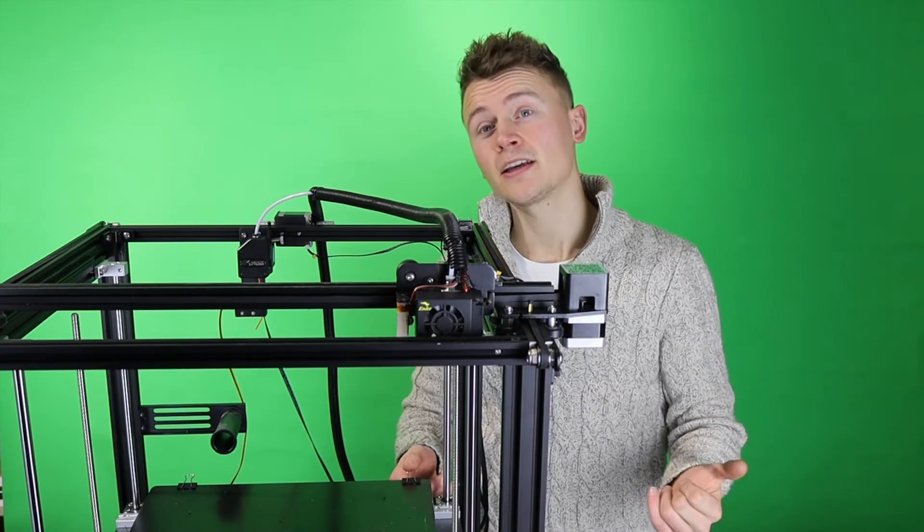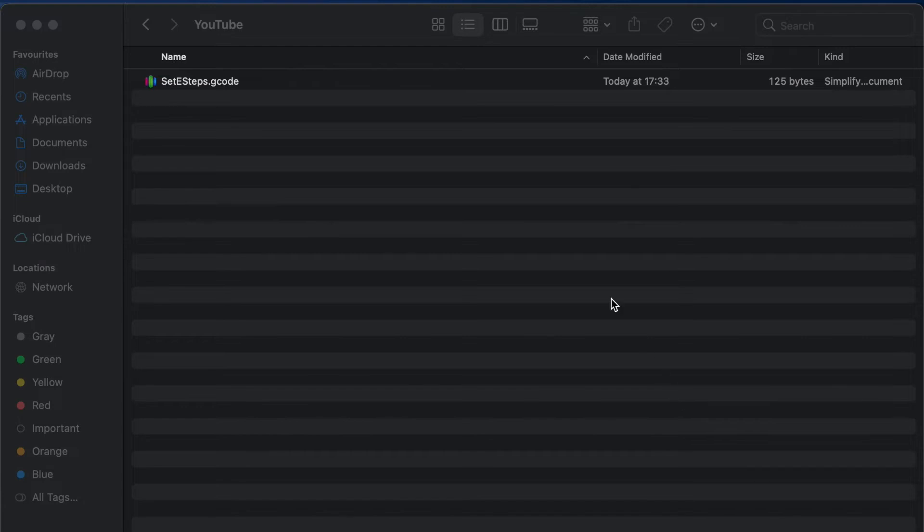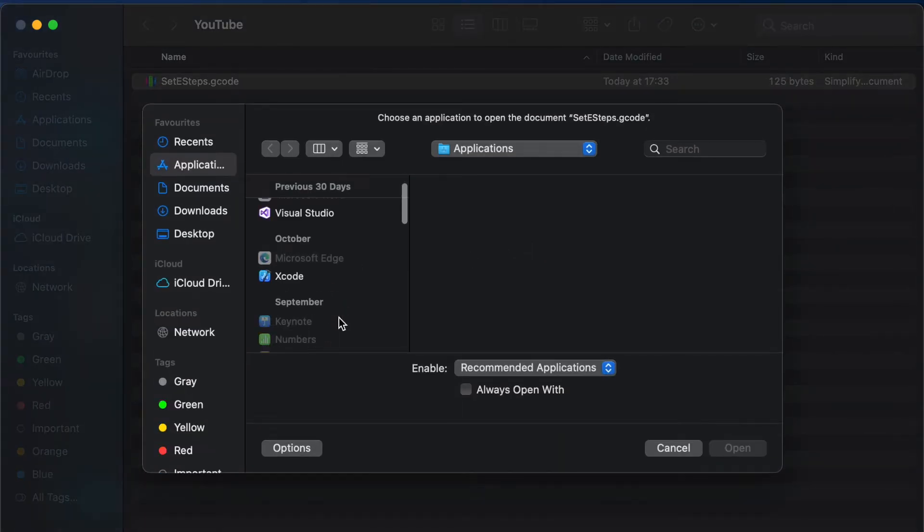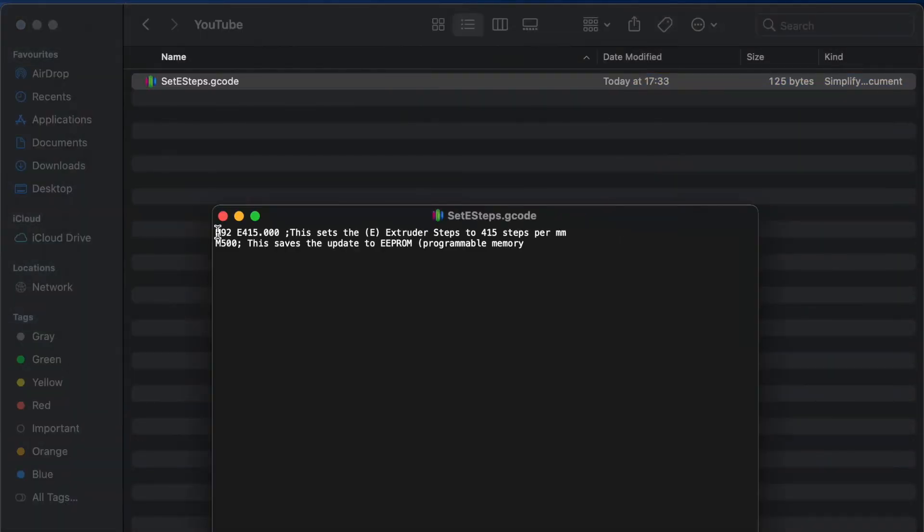Okay, so I'm going to show you now the commands that you need to do. I've just gone ahead and created this file which I'm calling set esteps. You can see there aren't many commands that are needed. We've got M92 E415.000 and that simply sets the extruder steps to 415 steps per millimeter. Obviously if you have a different value for your esteps then this is the value you change. Then you can do M500 and that command literally just saves the update to EEPROM, which is the programmable memory.